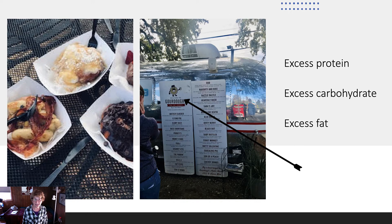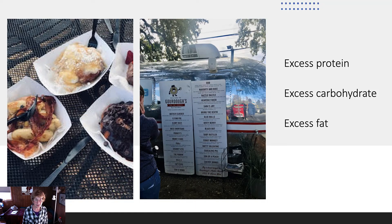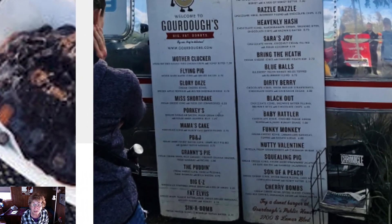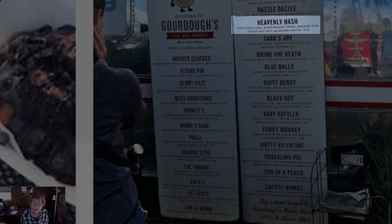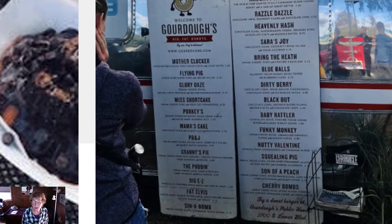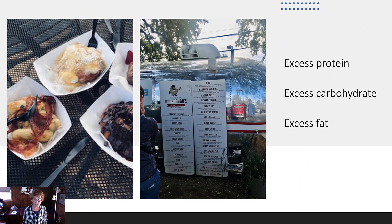And yes, indeed, we got excess protein, excess carbohydrate, and excess fat. You may not be able to see it on this particular picture, but I believe I got the one called Heavenly Hash — whichever was the most chocolatey, I assure you, that's the one I got.